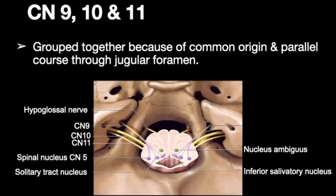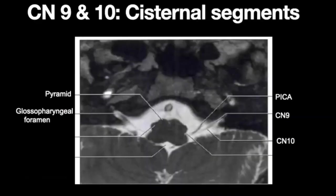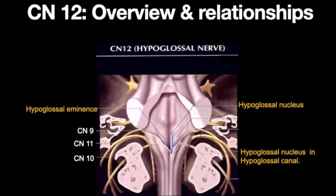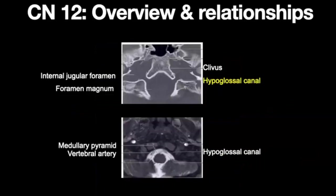The 9th, 10th and 11th cranial nerves are grouped together because of their common origin; they course very close to each other and ultimately pass through the jugular foramen. When scrolling through images they are virtually indistinguishable from each other. The 9th and 10th cranial nerves both course through the glossopharyngeal foramen. The 12th cranial nerve, unlike the 9th and 10th, courses inferiorly and has a separate foramen known as the hypoglossal canal, which lies well below the expected location of the glossopharyngeal nerve.